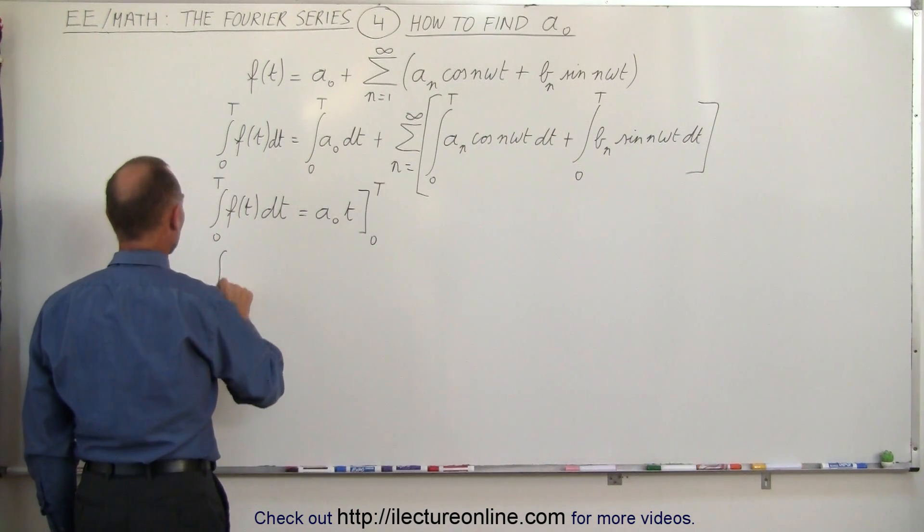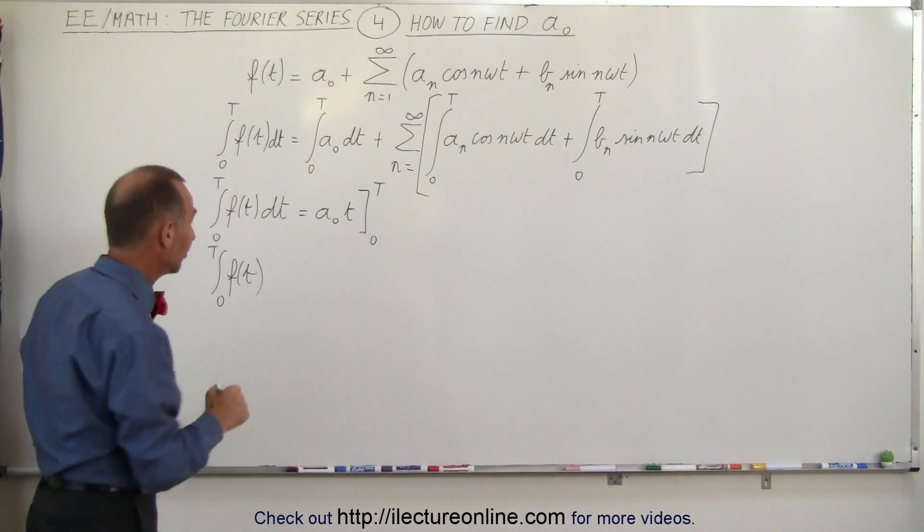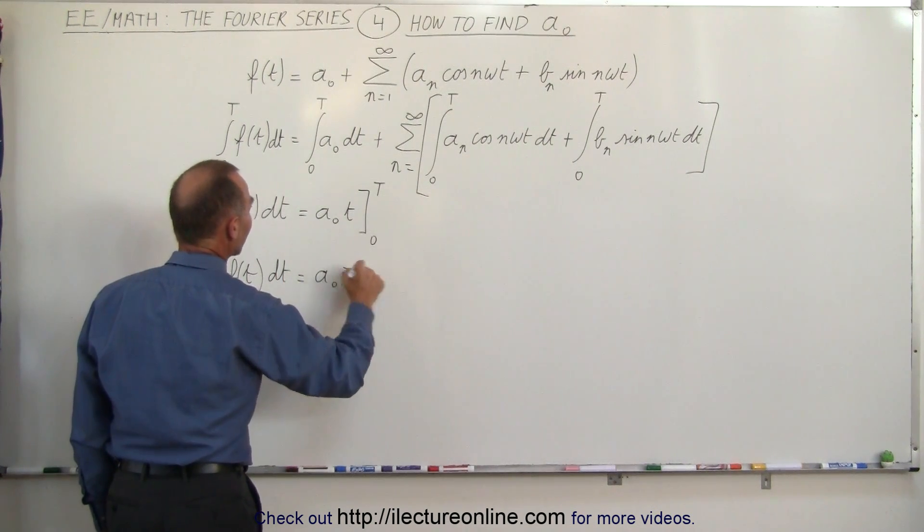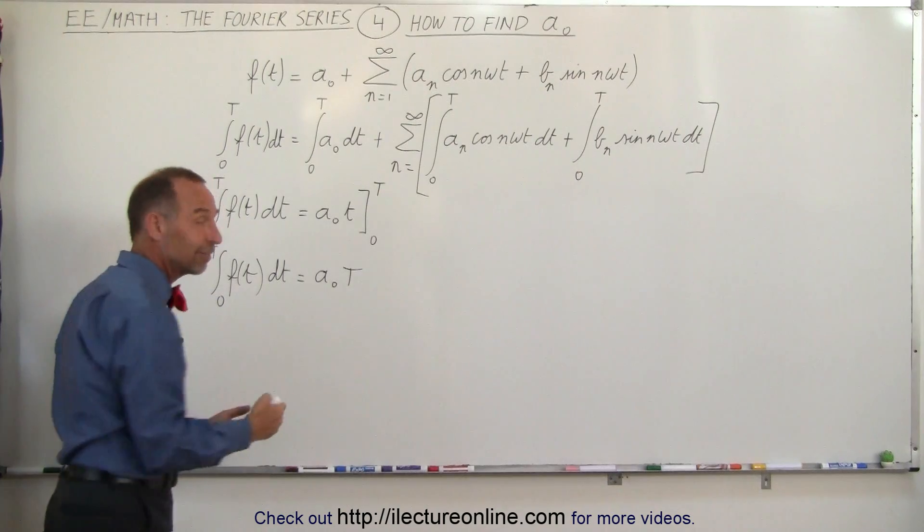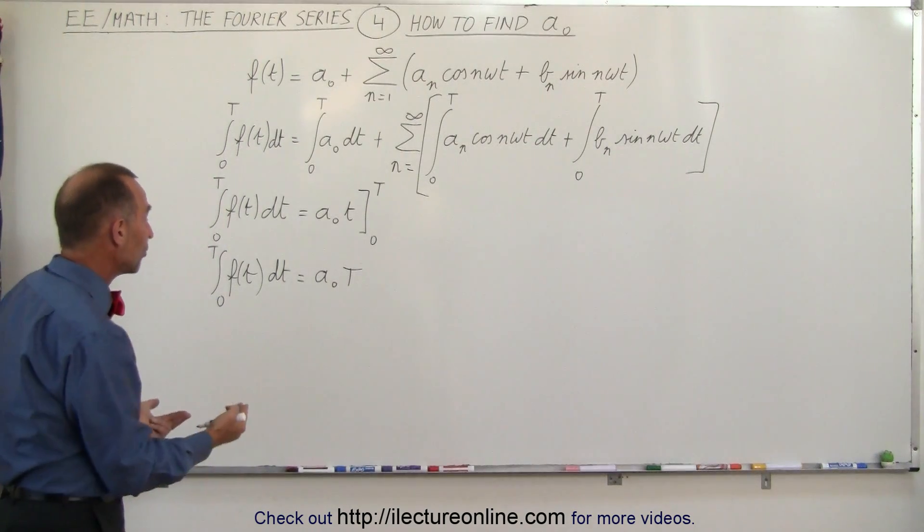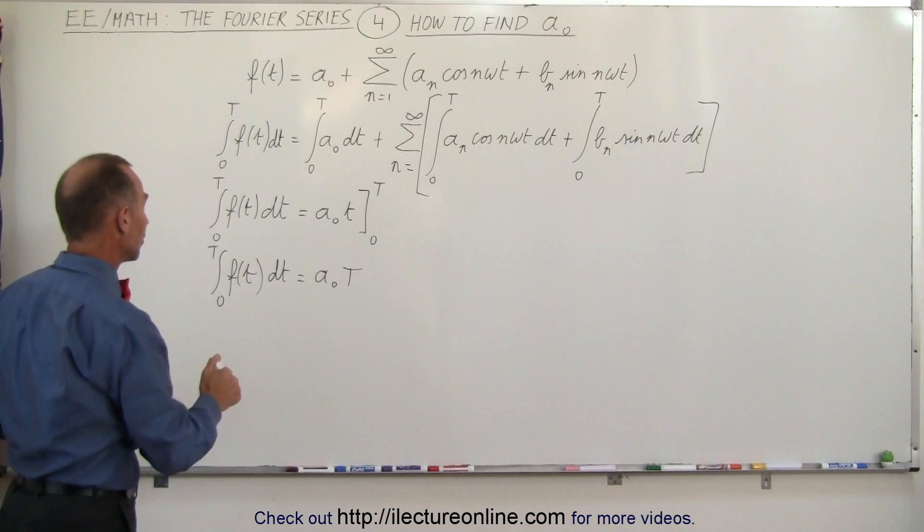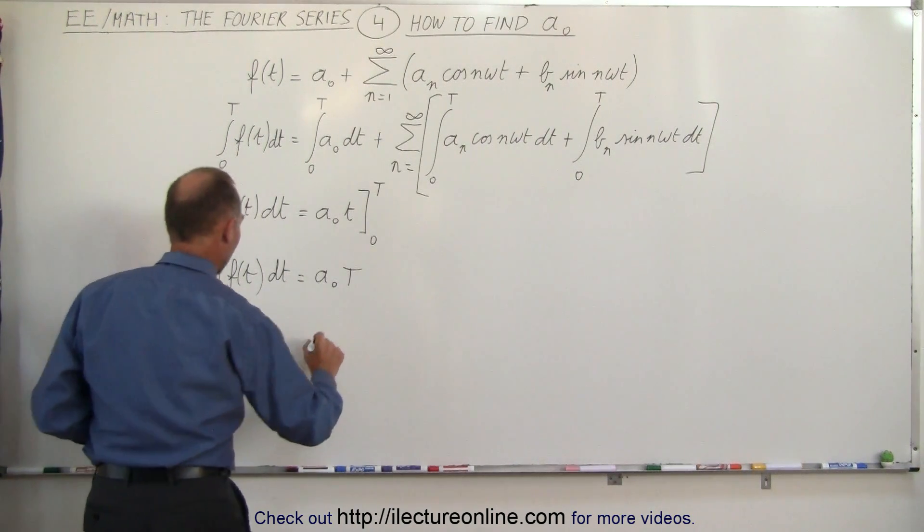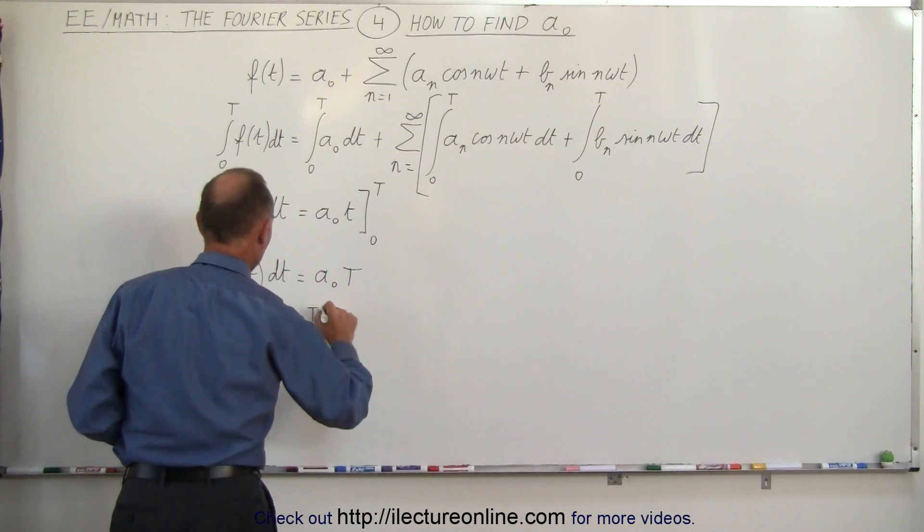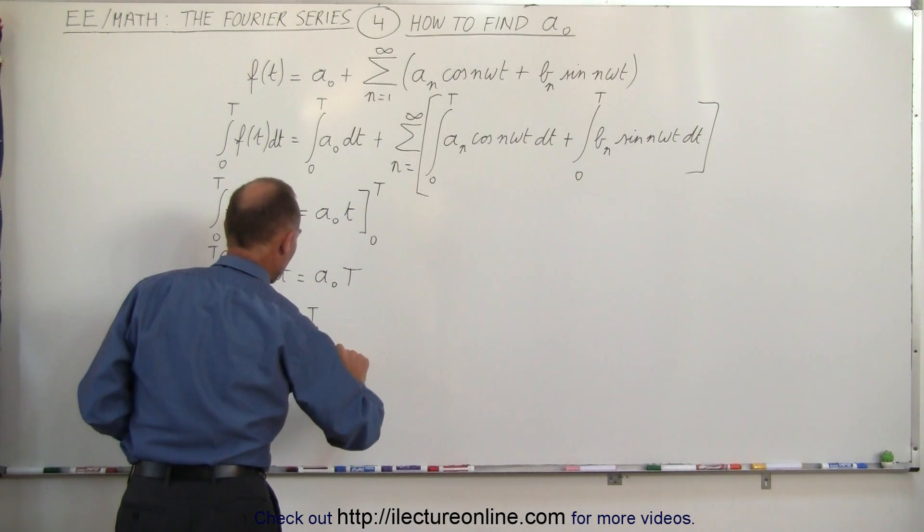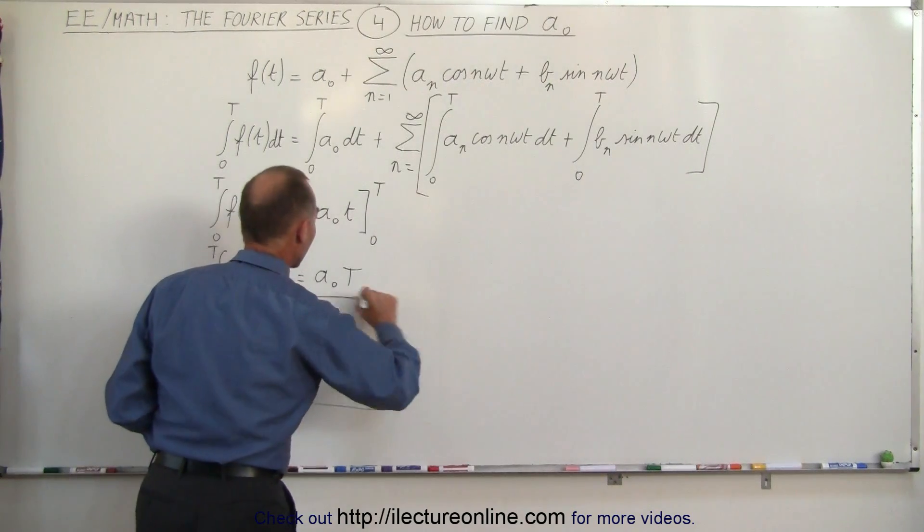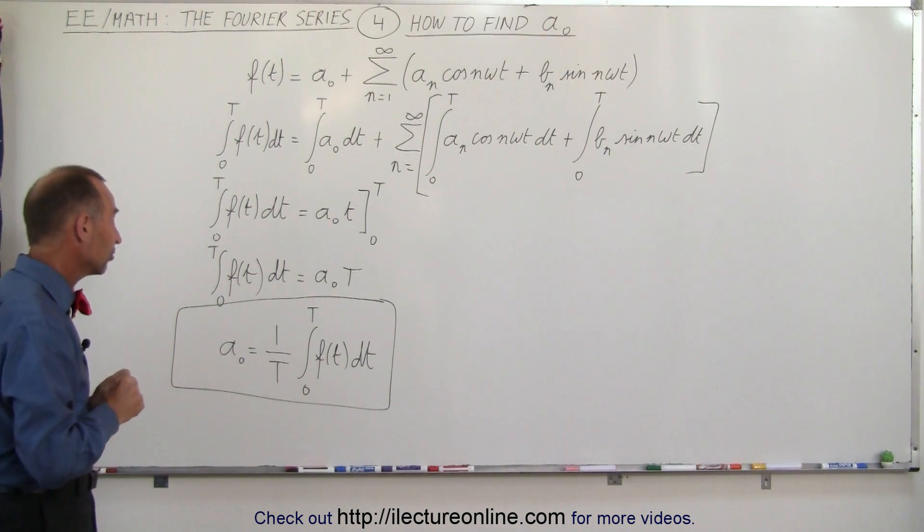So this means that the integral from 0 to T of the periodic function, of which we're trying to find the Fourier series, times dt, is equal to a sub-naught times T. And solving this for a sub-naught by simply dividing both sides of the equation by the period, and then rearranging the equation, we can say that a sub-naught is equal to 1 over the period times the integral from 0 to the period of the periodic function in question times dt. And this integral will give us the constant term of that periodic function.